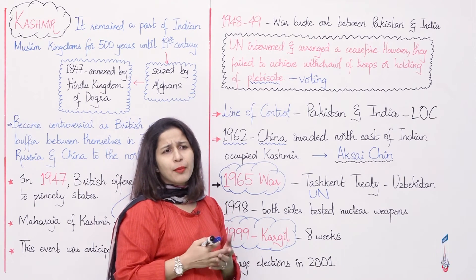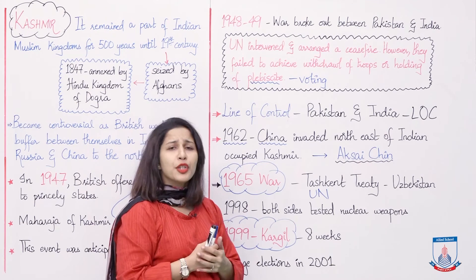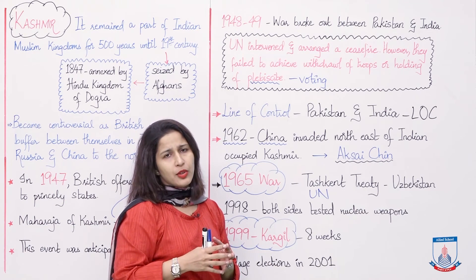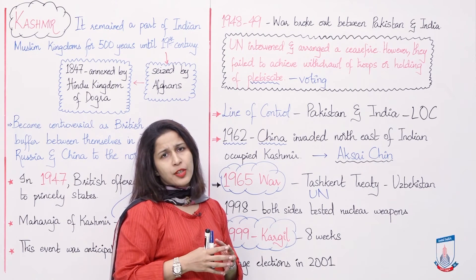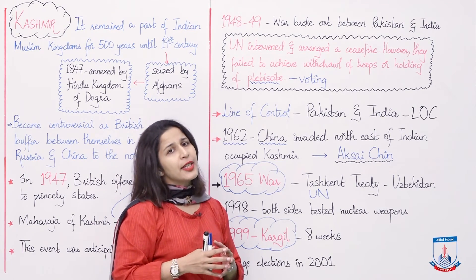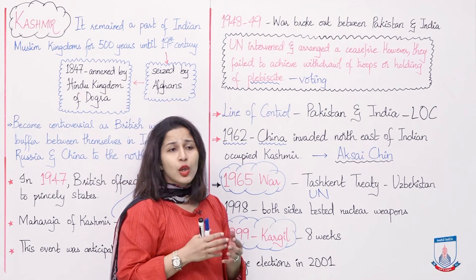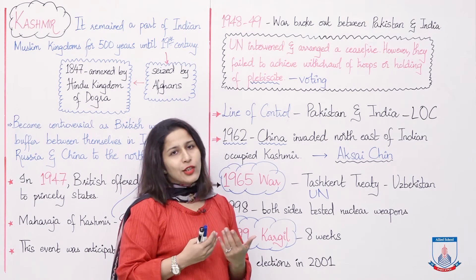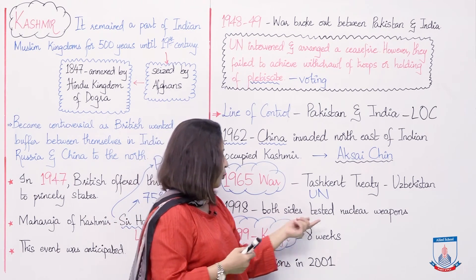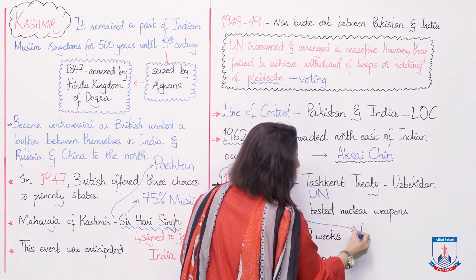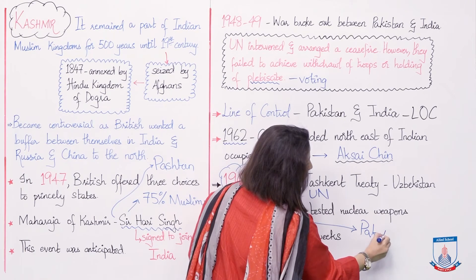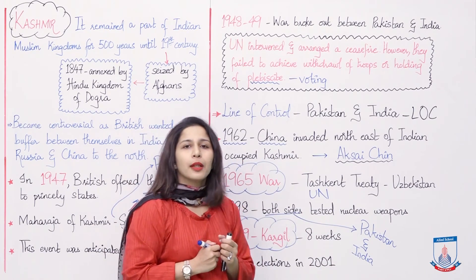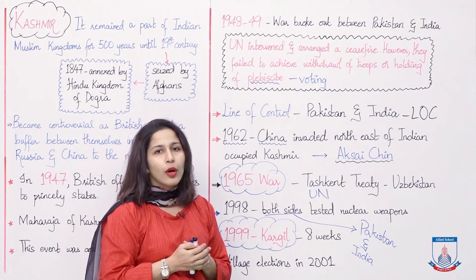Then small conflicts and uprisings kept going because there was no ultimate solution happening in Kashmir. The people wanted to become a part of Pakistan; however, there was also a 25% non-Muslim population. In 1998, Pakistan and India both announced that they had tested nuclear weapons.